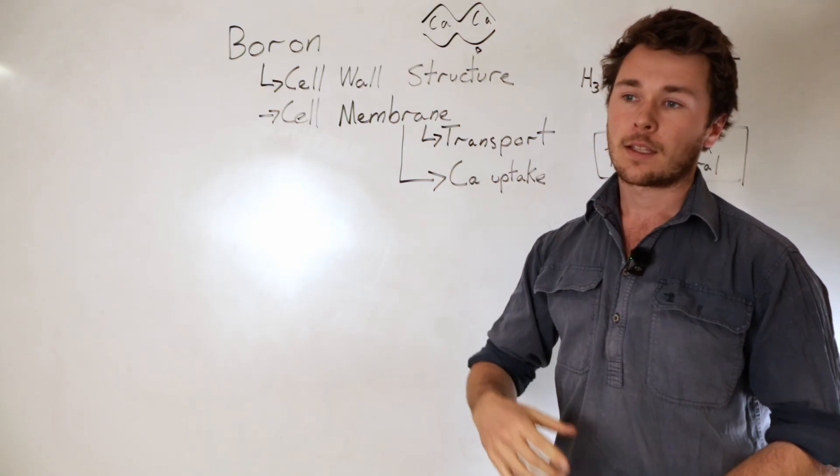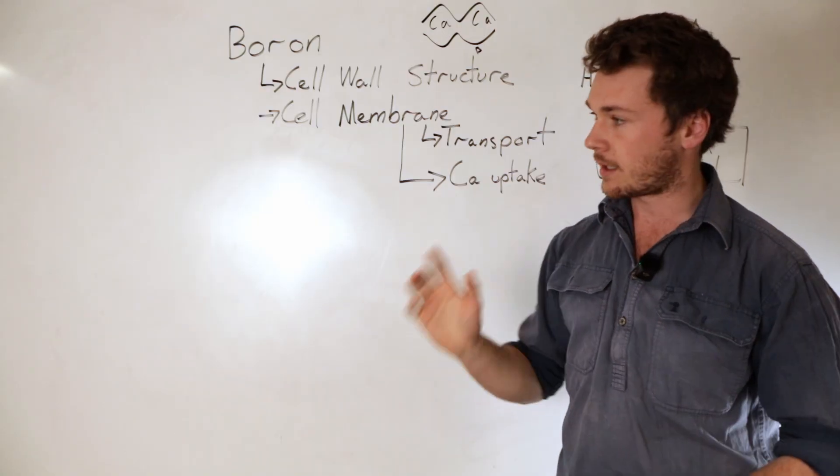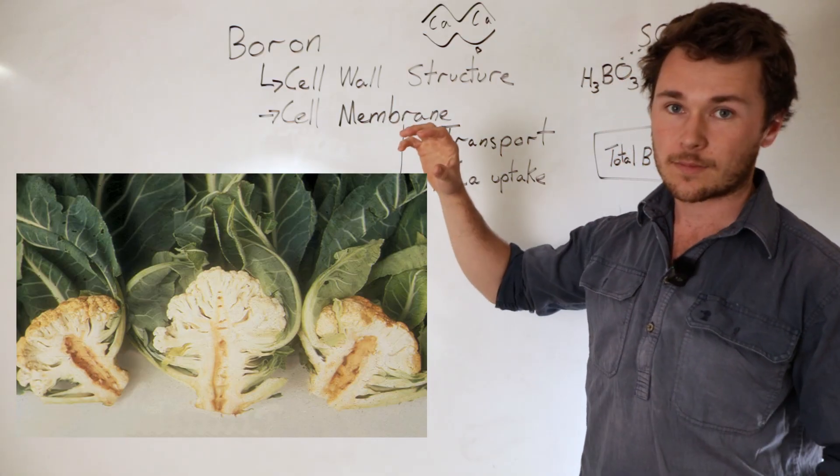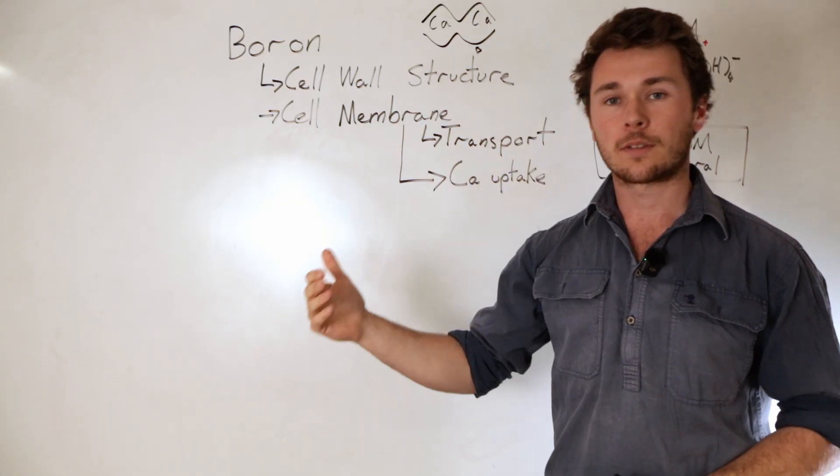In brassicas, you get the cracking of the stem, so you can see a few photos here. With cauliflower and canola, when you don't have the boron, it cracks the stems.